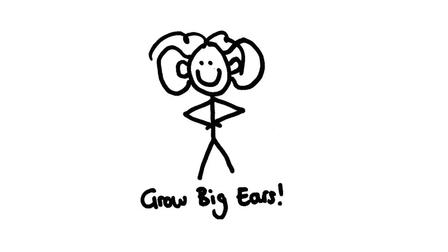Tip one: grow big ears. I'm not really suggesting that you should become like Dumbo, but you can use your ears as if they were as big as his. Listening is one of the most important tools for working successfully with others. The more you listen, the more information you'll pick up about what's going on and how other people are feeling.